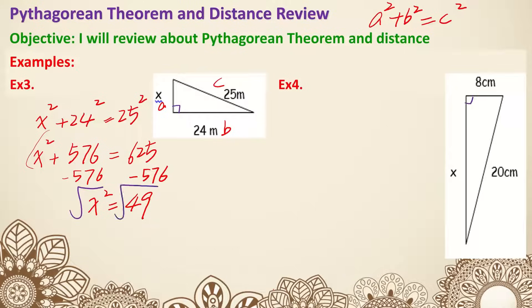Now we can take the square root to get rid of the square. The key is you can only take the square root when the square is the only operation left — you need to isolate X squared first before taking the square root. The square root of 49 gives X equals 7. Don't forget the unit — 7 meters. That's example three.